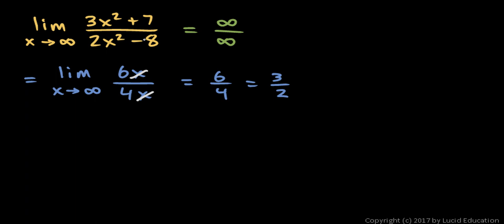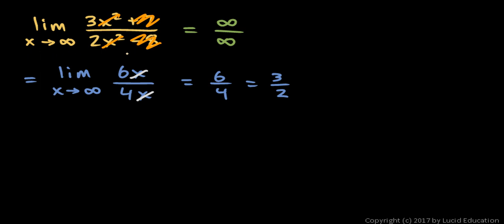L'Hopital's rule allows us to get to a simpler expression that can be evaluated by simple substitution when we have an indeterminate form. It's worth noting that this gives us the result we'd expect from earlier techniques. For limits of rational functions as x approaches infinity, the lower power terms become insignificant, so we can ignore them and look at 3x squared over 2x squared. The x squareds cancel, leaving 3 over 2 — the same result as L'Hopital's rule.